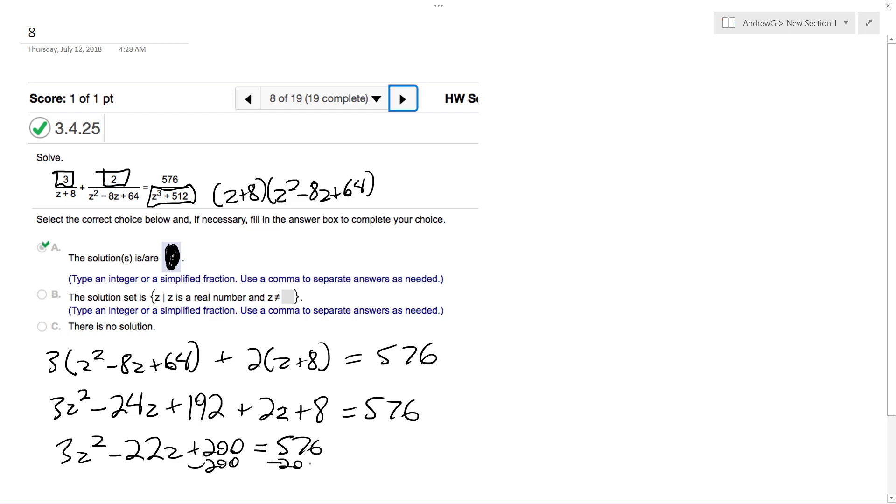So we get 3z squared minus 22z minus 376 equals 0. Actually, 3z squared minus 22z minus 376 equals 0.